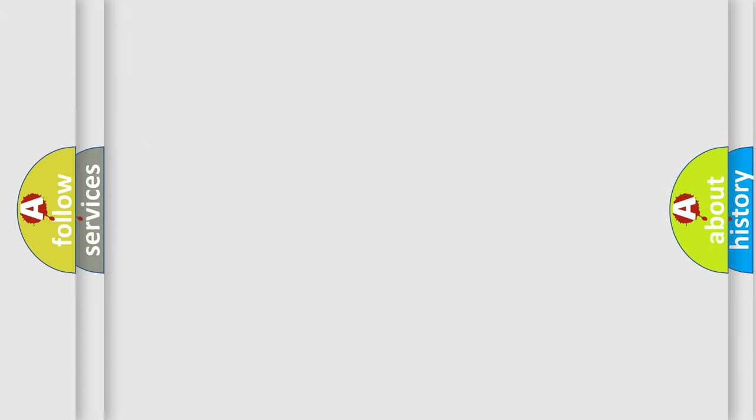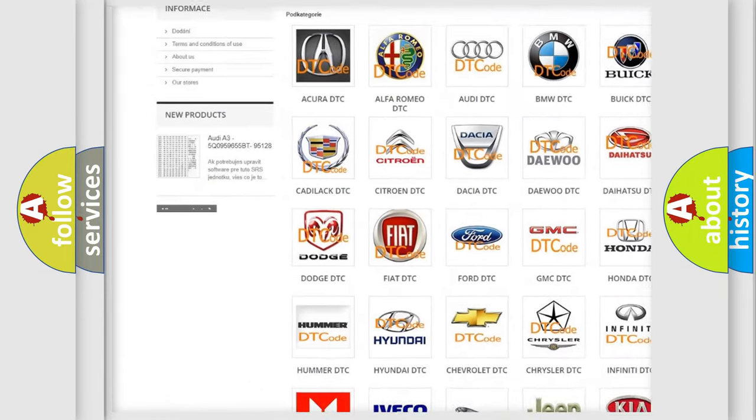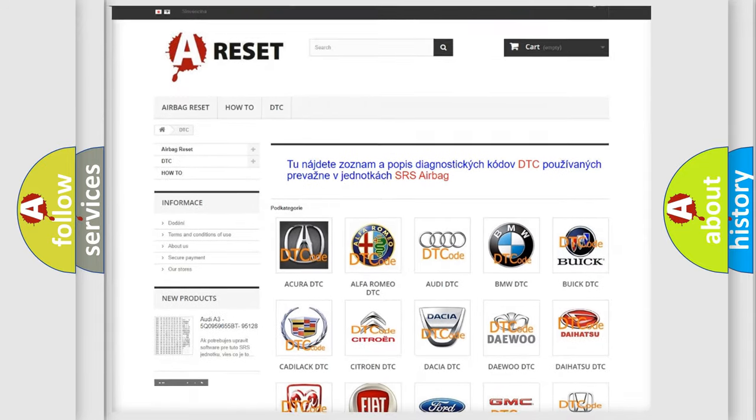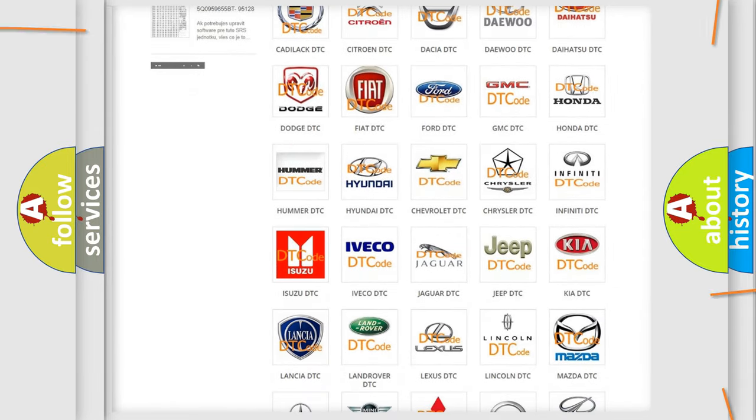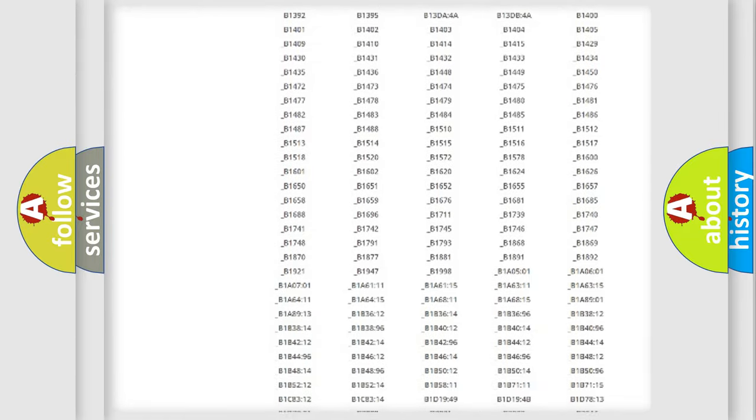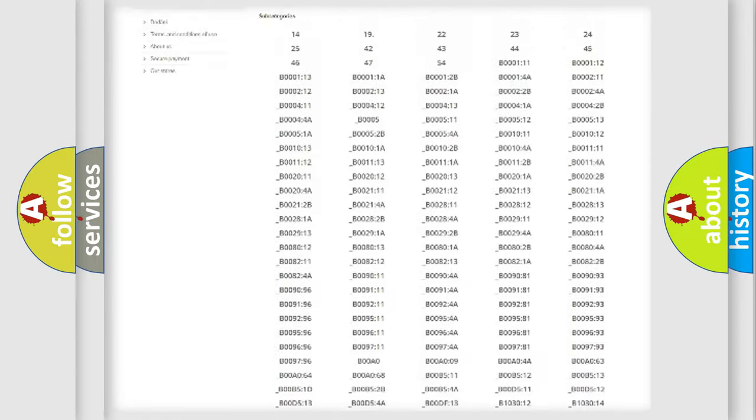Our website airbagreset.sk produces useful videos for you. You do not have to go through the OBD2 protocol anymore to know how to troubleshoot any car breakdown. You will find all the diagnostic codes that can be diagnosed in Jeep vehicles.